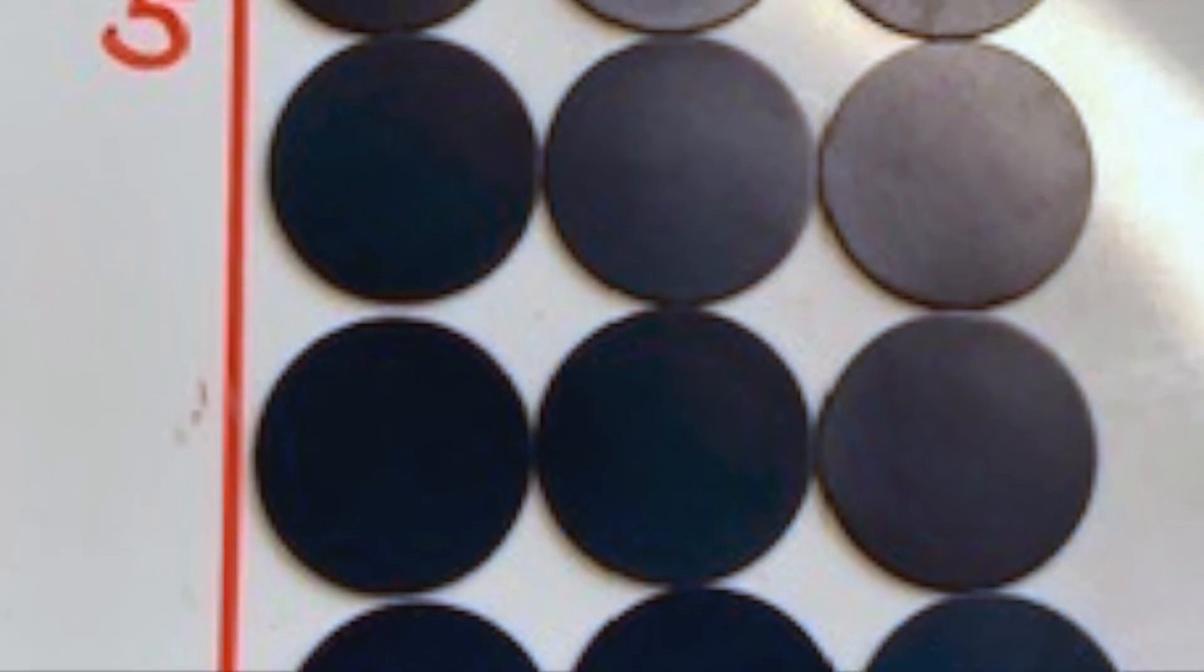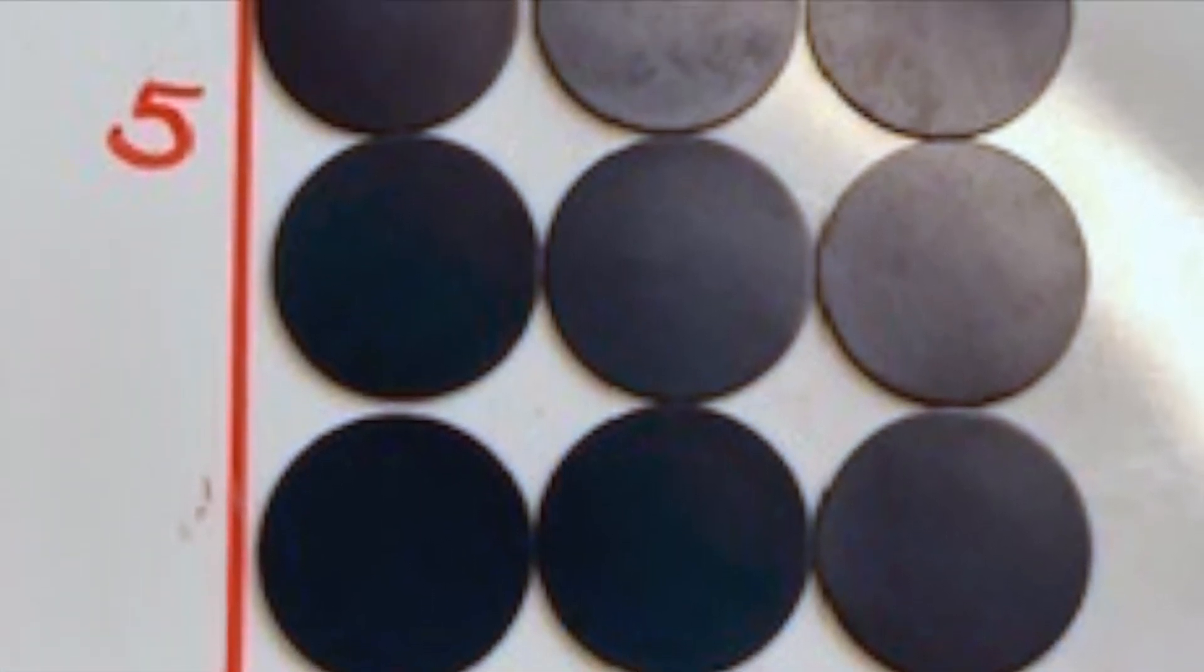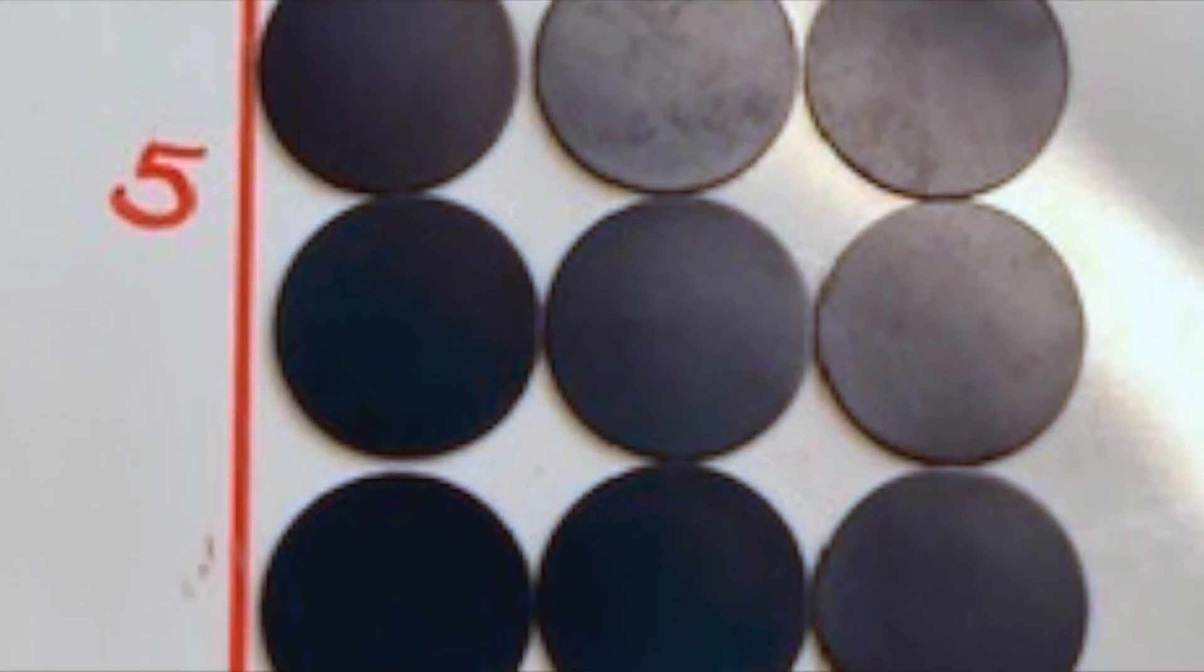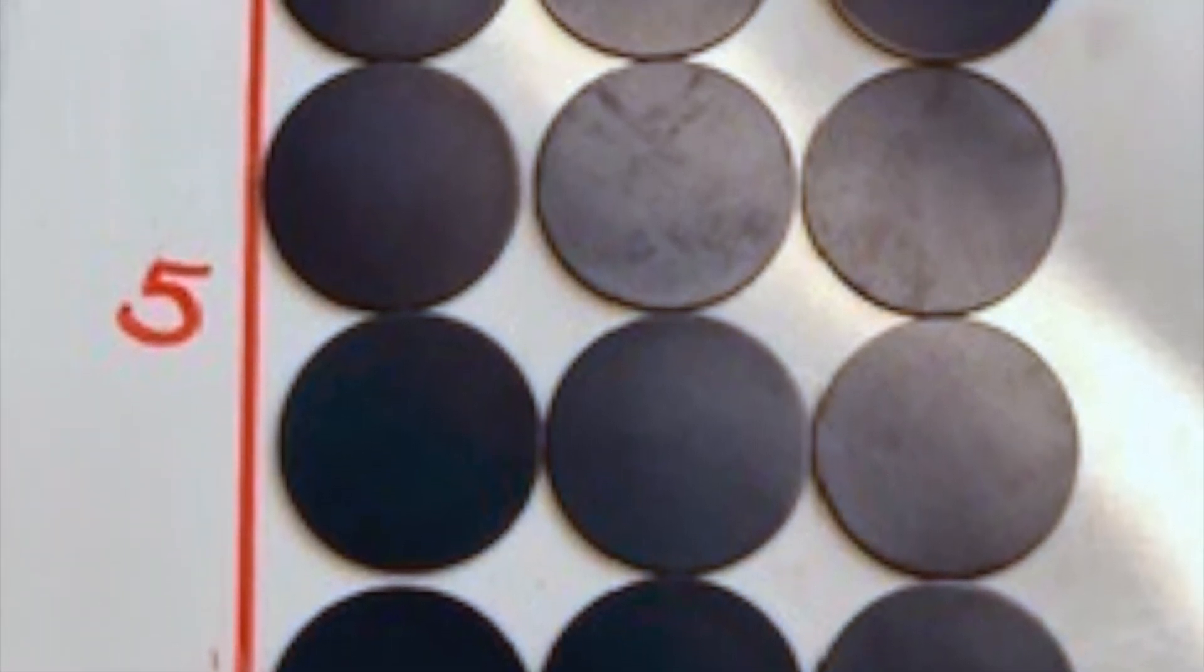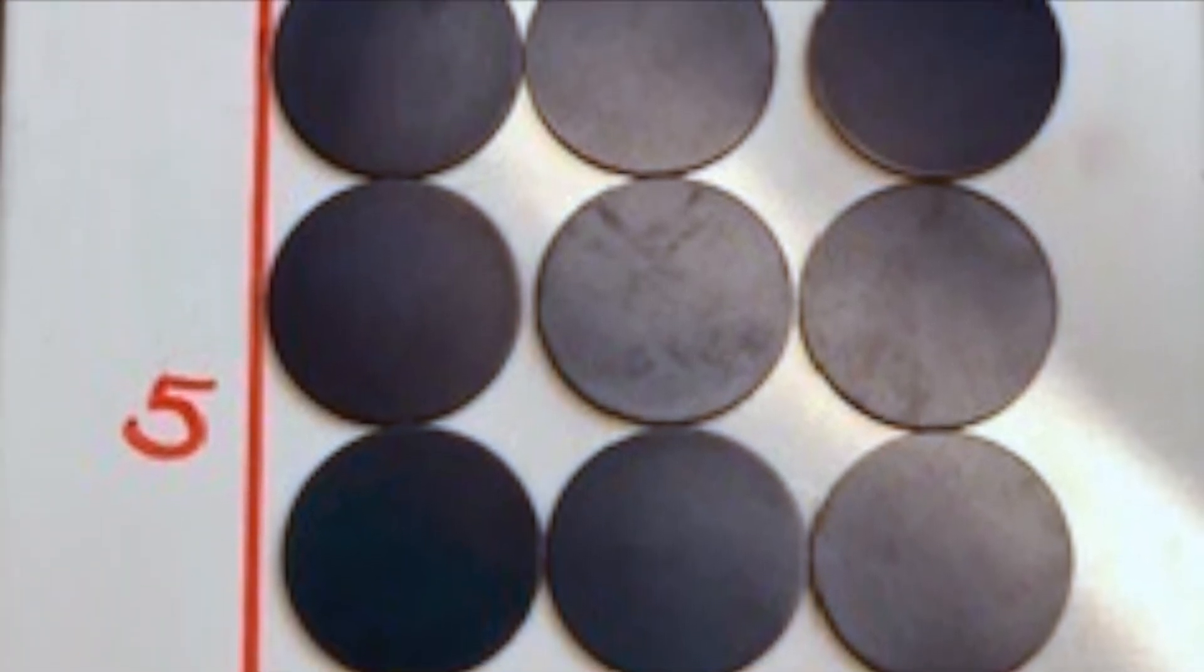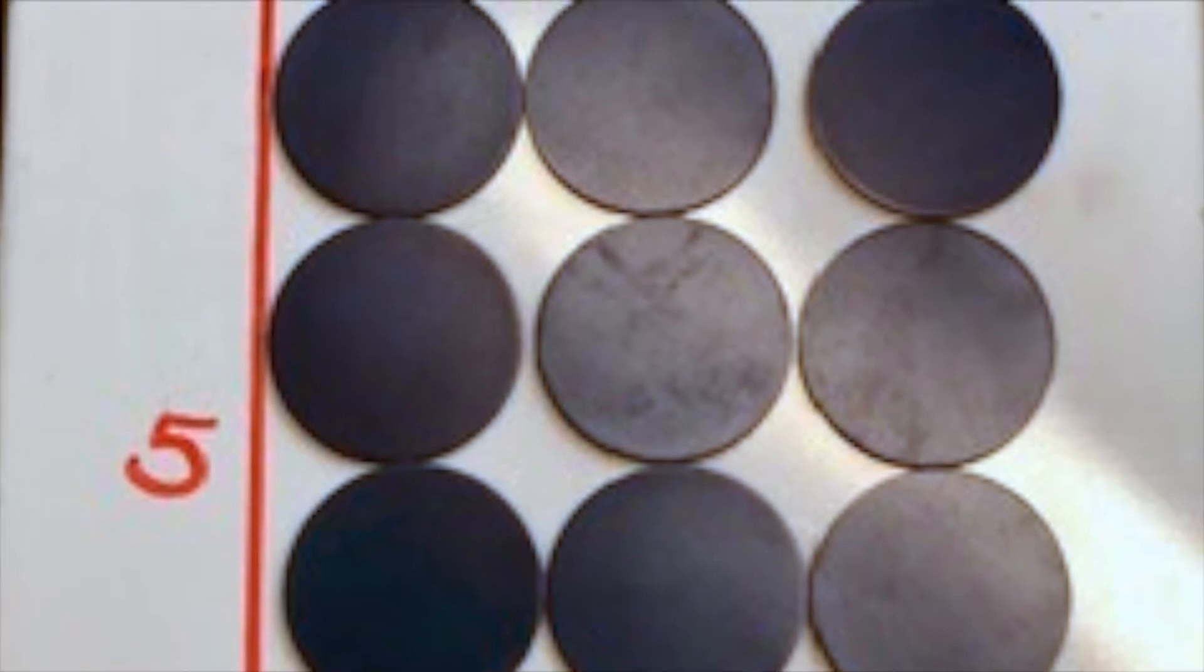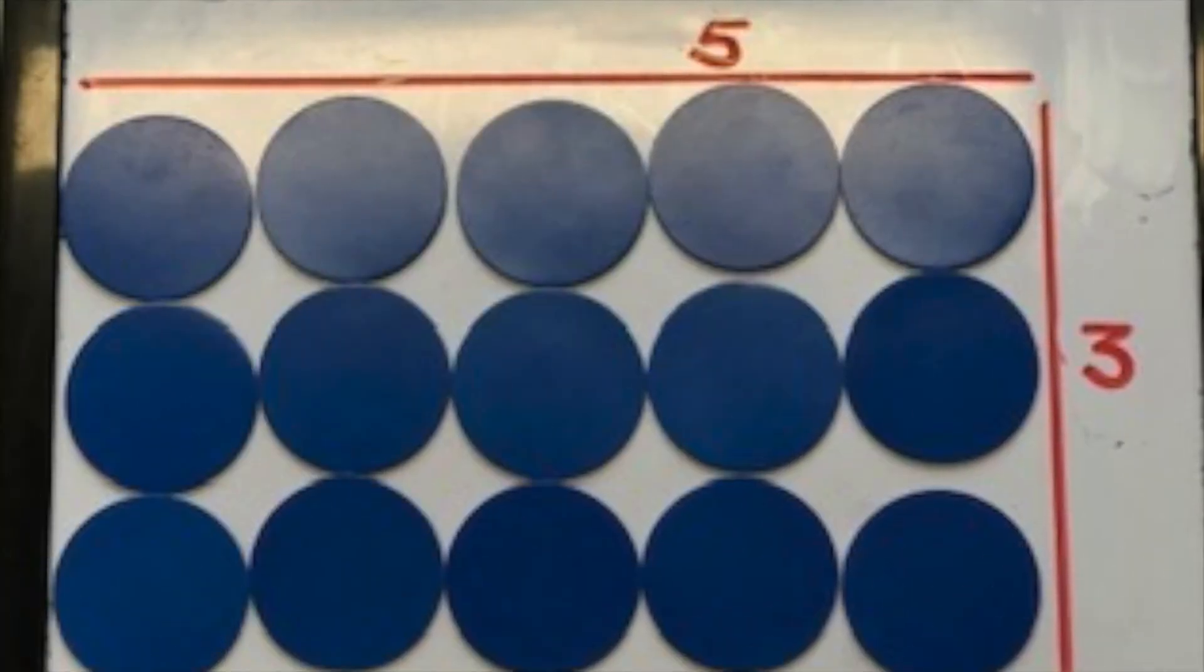This is an array display to show the use of multiplication. You can see that we've got 5 times 3. If I work on this, I can start with 5 counters and how many times am I going to have 5 counters? One, two, three. What is my total? Fifteen. Now I want to show you that multiplication can be done in any order.